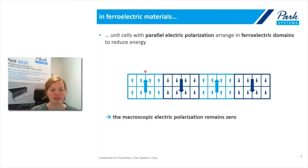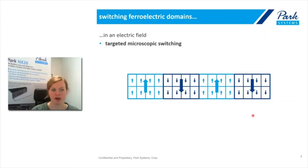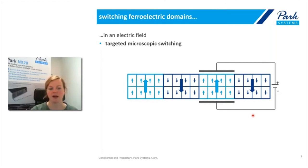I want to start off by talking about ferroelectric materials. If we look at ferroelectric materials, we find certain areas where we have a uniform parallel electrical polarization, and these areas are called ferroelectric domains. However, the overall distribution of these domains is pretty random, giving us a macroscopic electrical polarization that is zero. What makes these materials interesting for applications is that once we apply an electric field, we can switch the domains in the direction we want by choosing the electric field direction — not only macroscopically but also targeting a certain domain area by applying a microscopic electric field.